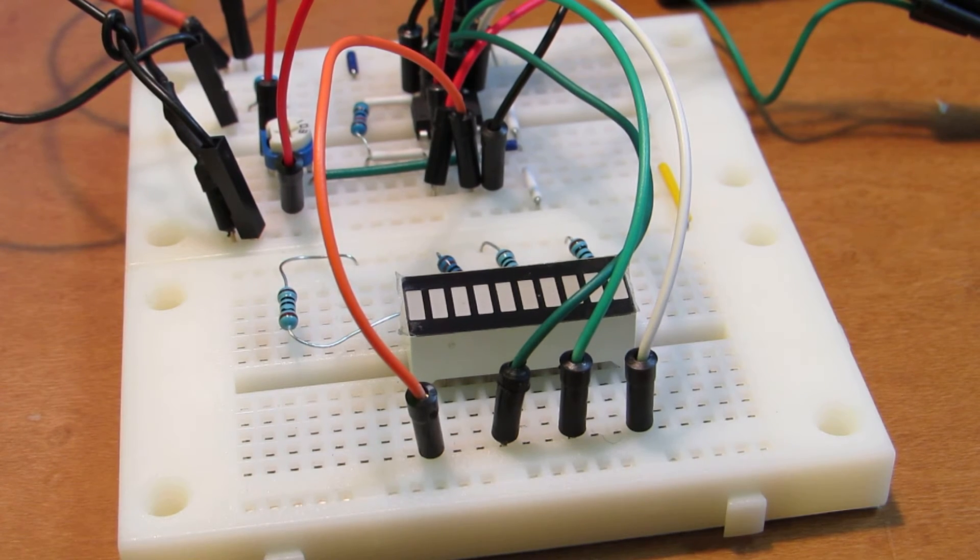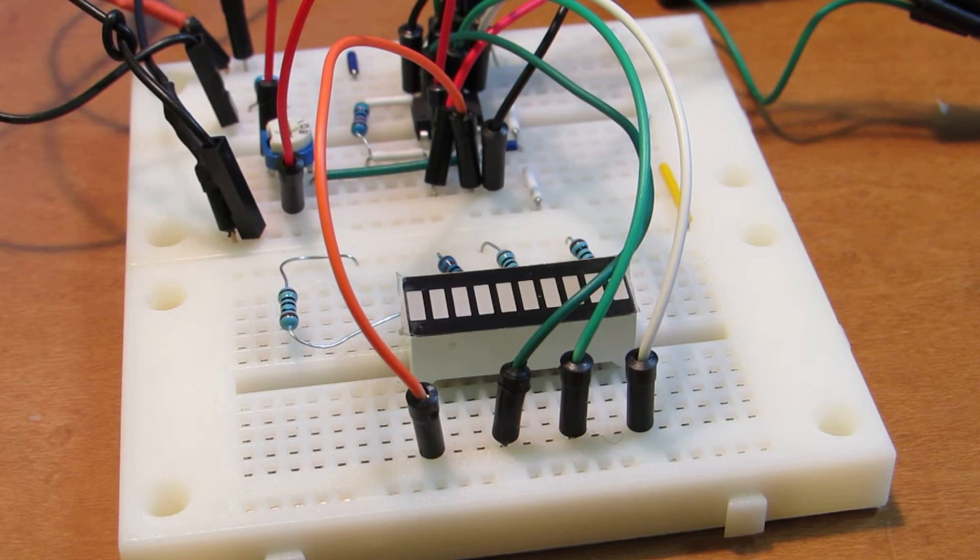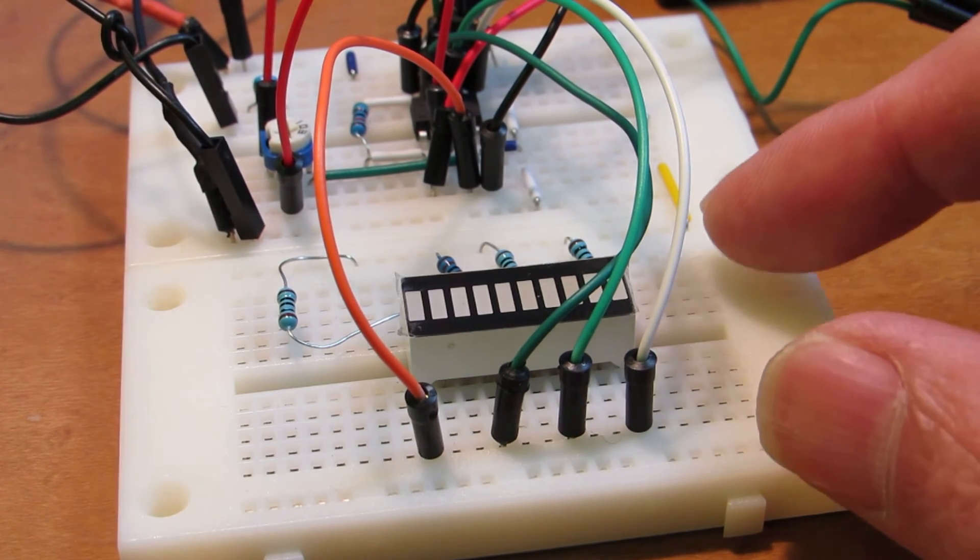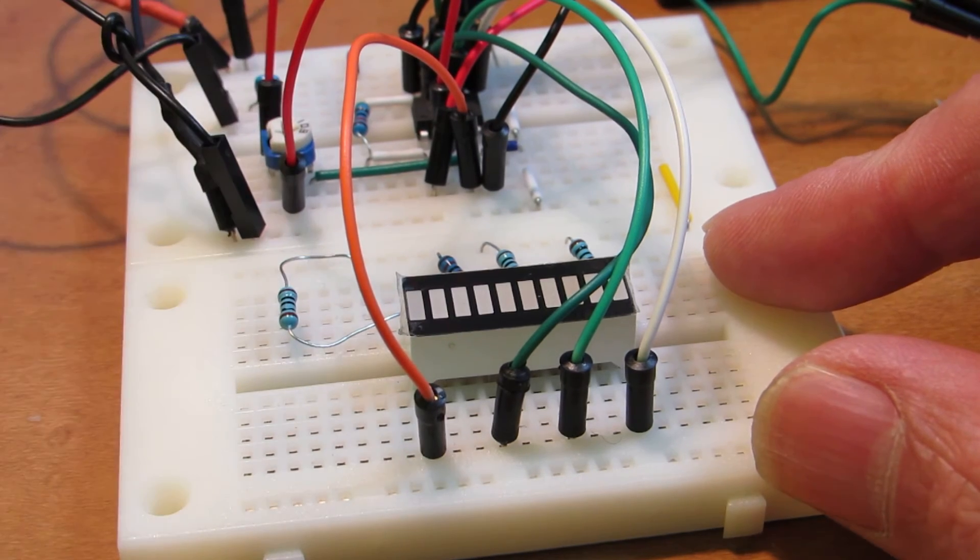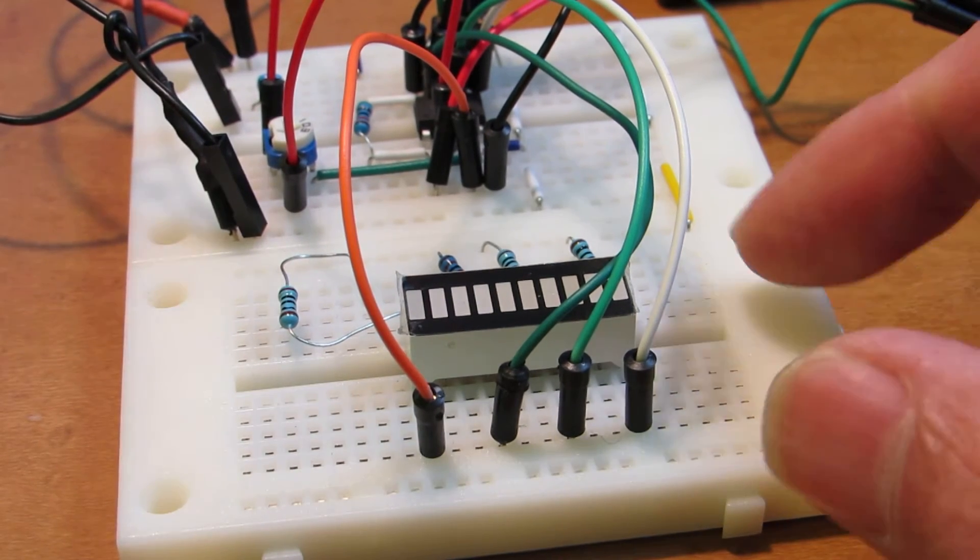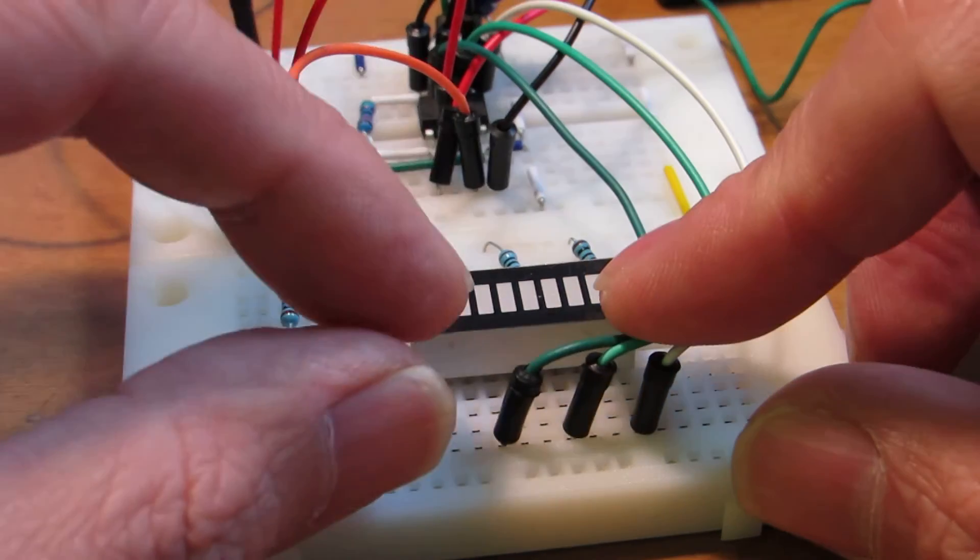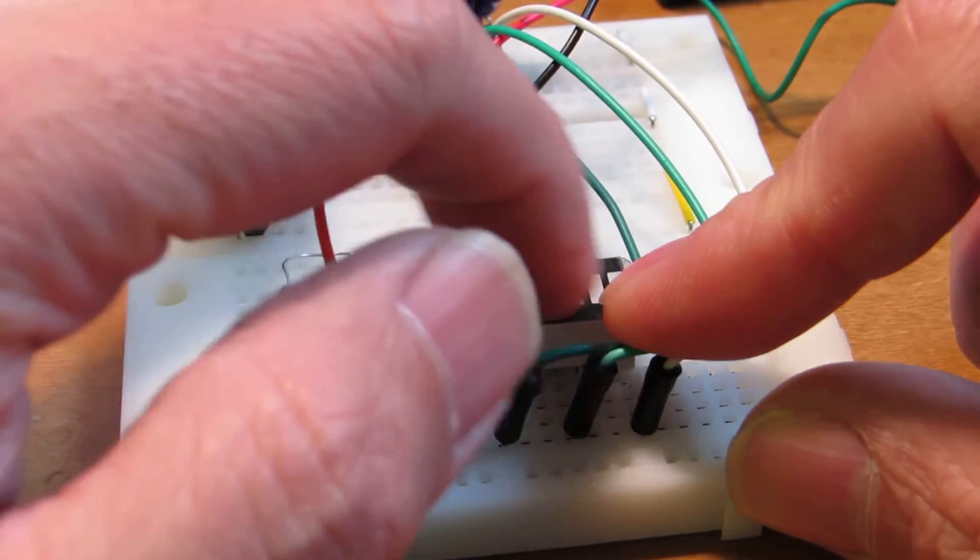I already put the program into ATtiny which is written in assembly. And here is a wiper and this will generate a variable voltage and the result will be shown on these LEDs.